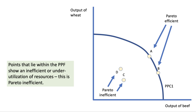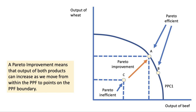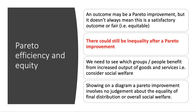If we think about a combination at C and a combination at A — remember A lies on the curve and C lies beneath the curve — C is Pareto inefficient. But if we could move towards the curve, move from C to point A, that would be a Pareto improvement because we can increase the output of both products, moving from within the PPF to a point on the boundary itself. Likewise, a movement from C to D would also be a Pareto improvement.